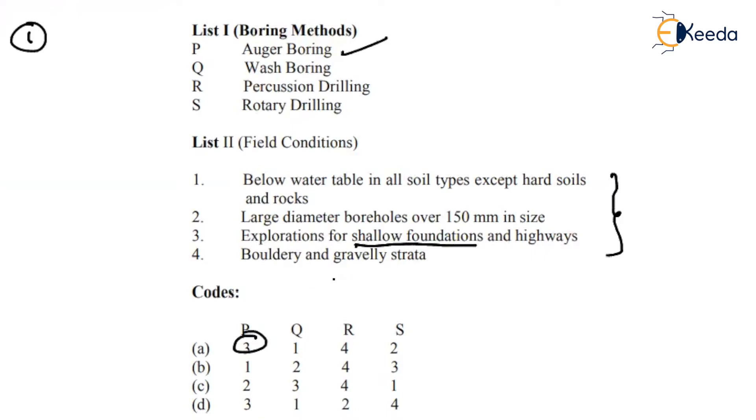For me P is three, it looks suitable. What about Q? Q is one in both the cases. Wash boring means it can be applicable for all the type of soils except the hard rocks. So Q is okay. Then what about the percussion boring and rotary drilling?